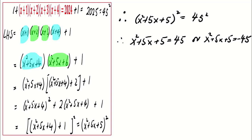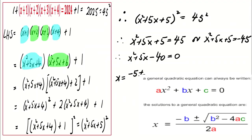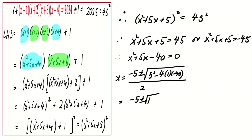For the first case, x² + 5x - 40 = 0. Using the quadratic formula, x equals (-5 ± √(5² - 4(1)(-40)))/2, which simplifies to (-5 ± √185)/2.